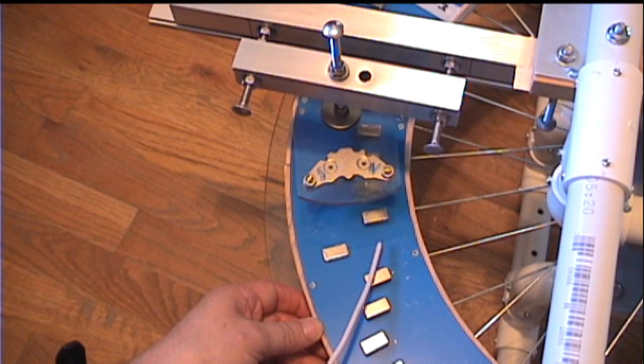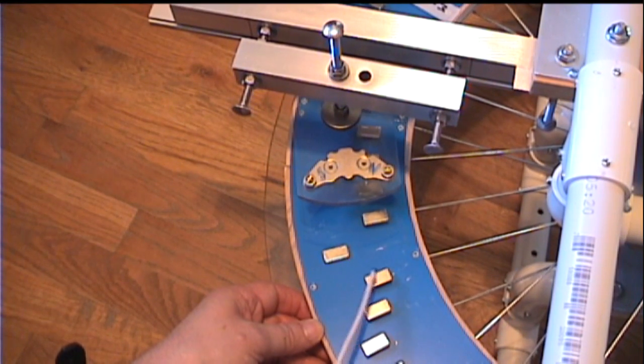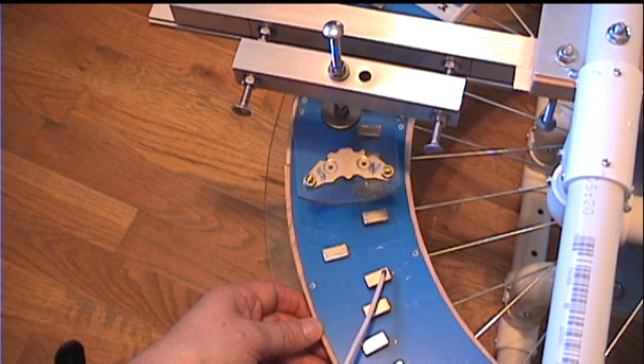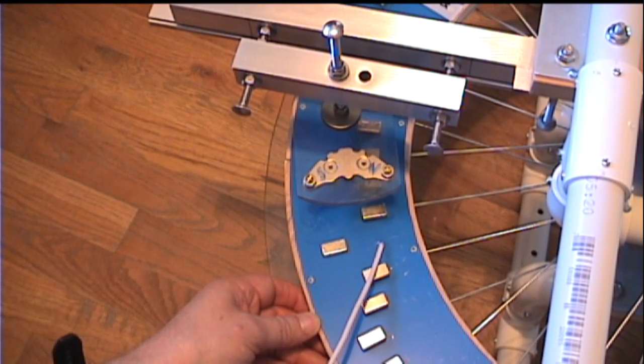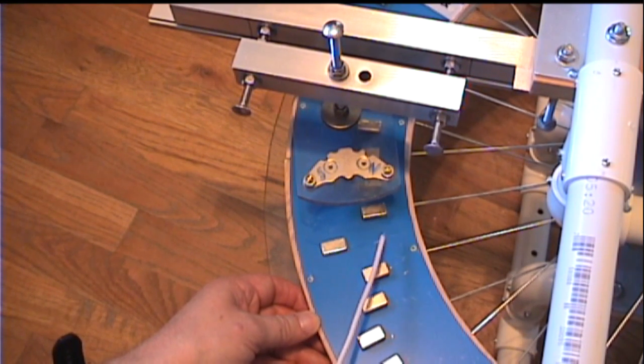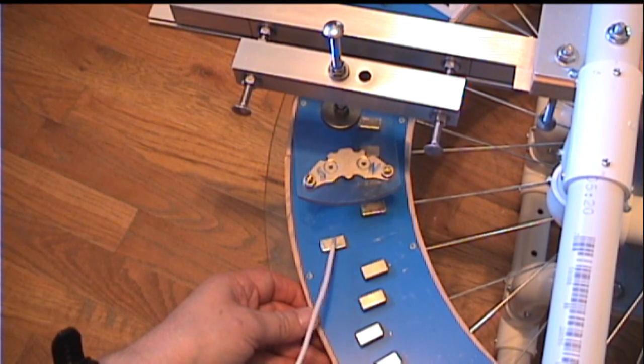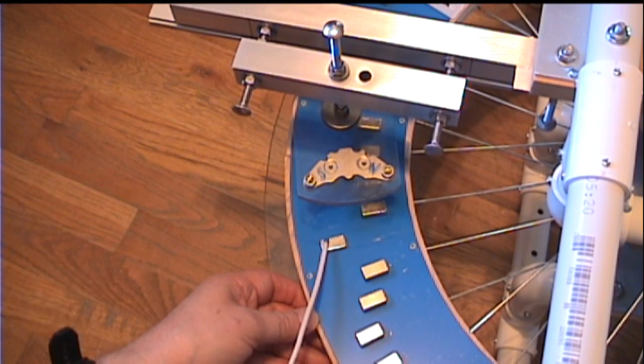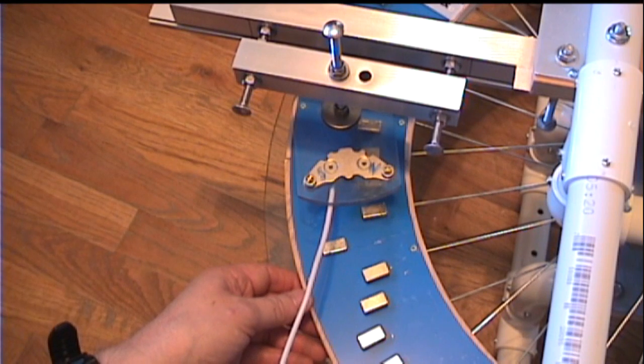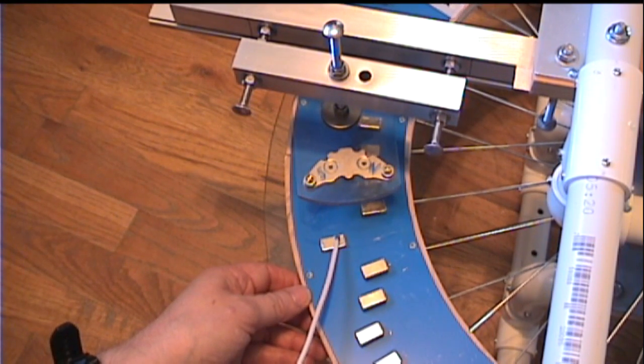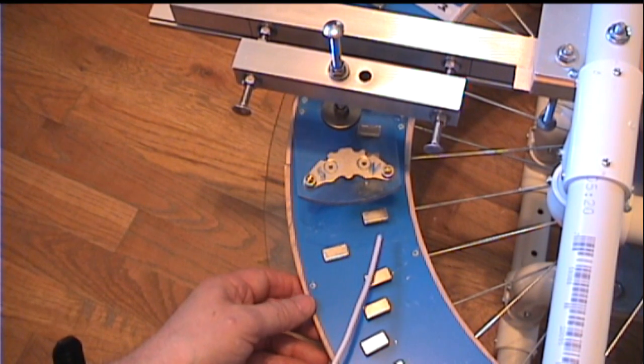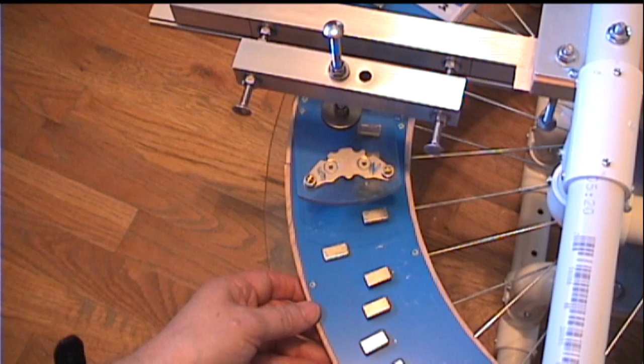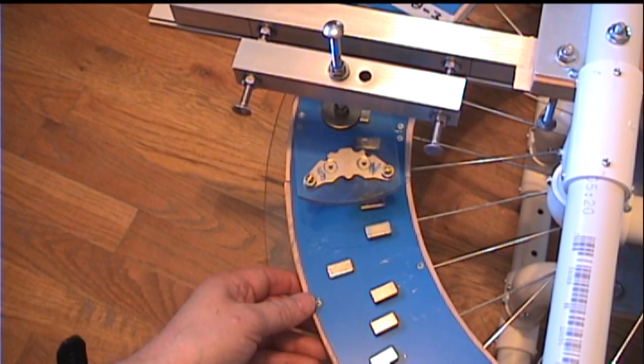it seemed that it would just slow down as soon as it passed this magnet. It would slow down and almost come to a dead stop somewhere in between these two magnets. I didn't like that. So I put this single magnet here just to give a little bit of attraction at this point, just to keep the rotation moving so that it would advance to the next series of magnets.